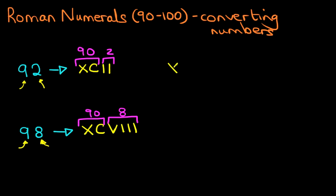We've got XCIV. Now what number does that represent? So we start on the left-hand side. We've got X, but then we've got C. Now we know that XC is 90.